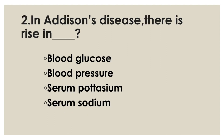In Addison's disease, there is a rise in: Option A: Blood glucose. Option B: Blood pressure. Option C: Serum potassium. Option D: Serum sodium. Answer: Option C, Serum potassium.